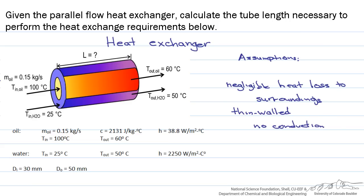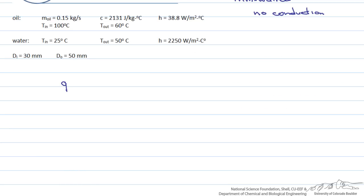Let's start with our governing equation. The heat transfer rate is equal to the overall heat transfer coefficient times the wetted surface area times our delta T log mean. We use a delta T log mean because delta T — the difference between the hot and cold temperatures — varies along the length of the heat exchanger, so we use a log mean temperature.